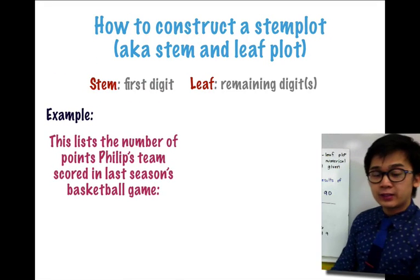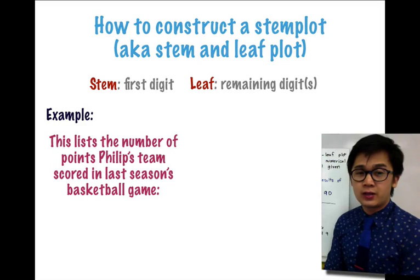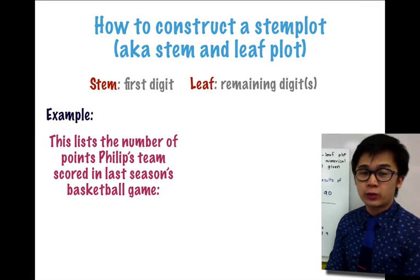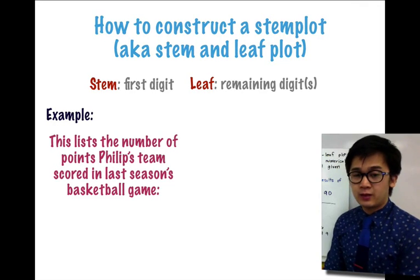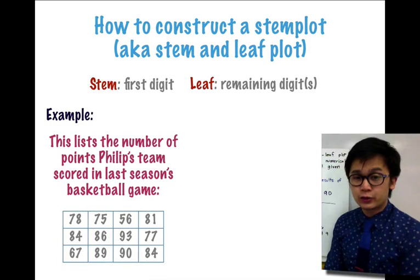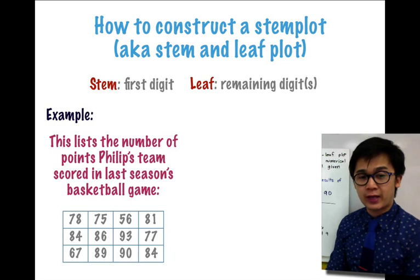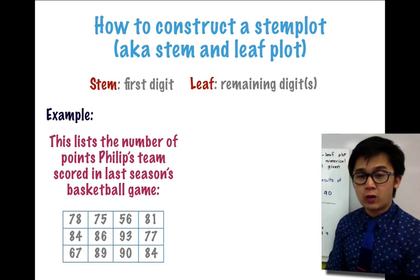In this particular example, we are using the lists of the number of points Philip's team scored in the last seasons of their basketball game, and these are their scores for that particular season, so we have 78, 75, 84, and so on.